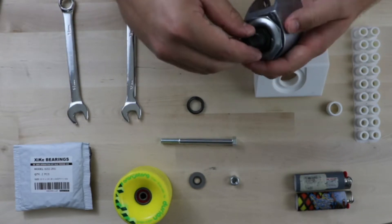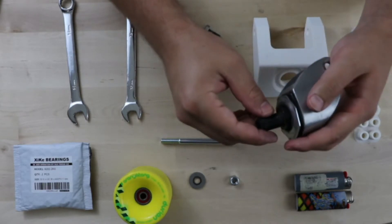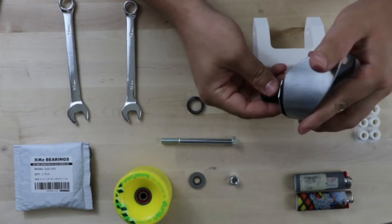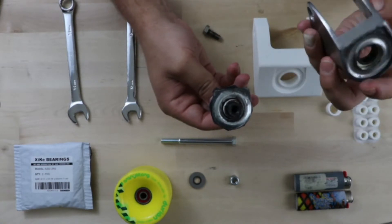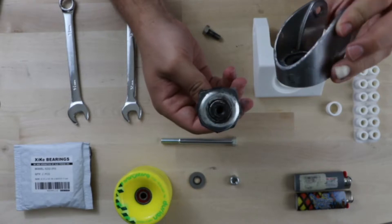So here comes the messy parts. So they do fill these with grease, so what we'll want to do is we'll take it and we'll flip it upside down.